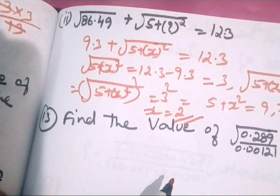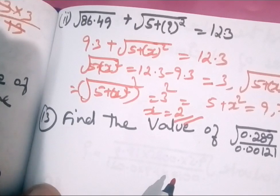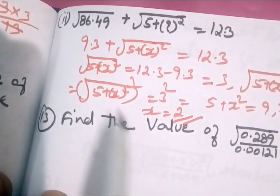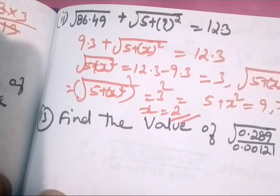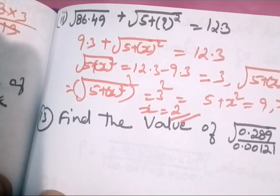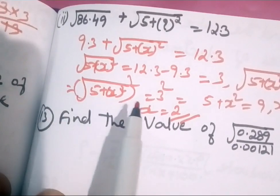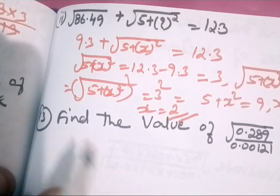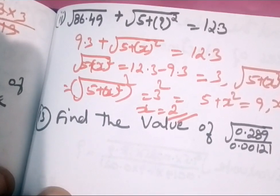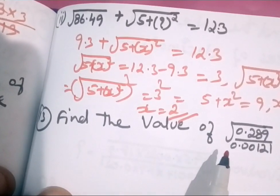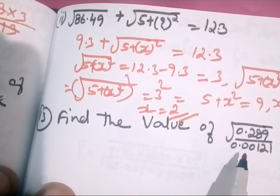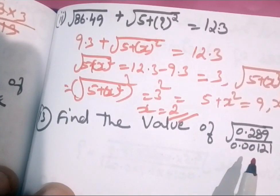Now we have to do question number 13: find the value of root 0.289 divided by 0.00121.